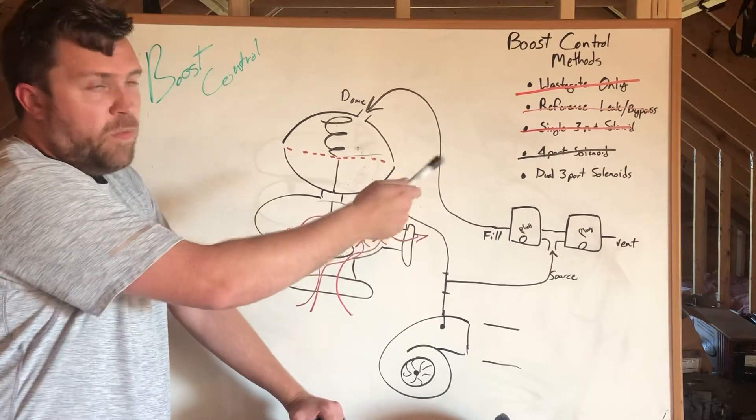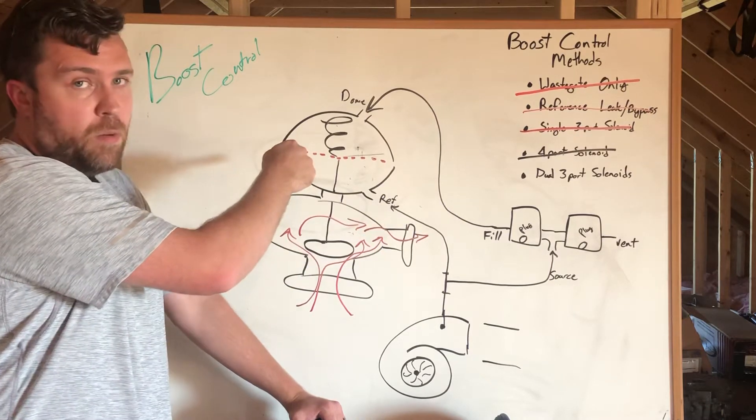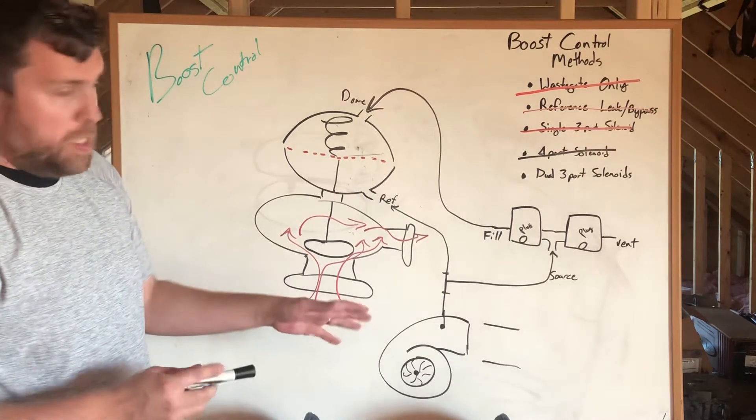I call it output vent. That's the solenoid that lets air that's in the dome go out. The way that this works is pretty intuitive actually.